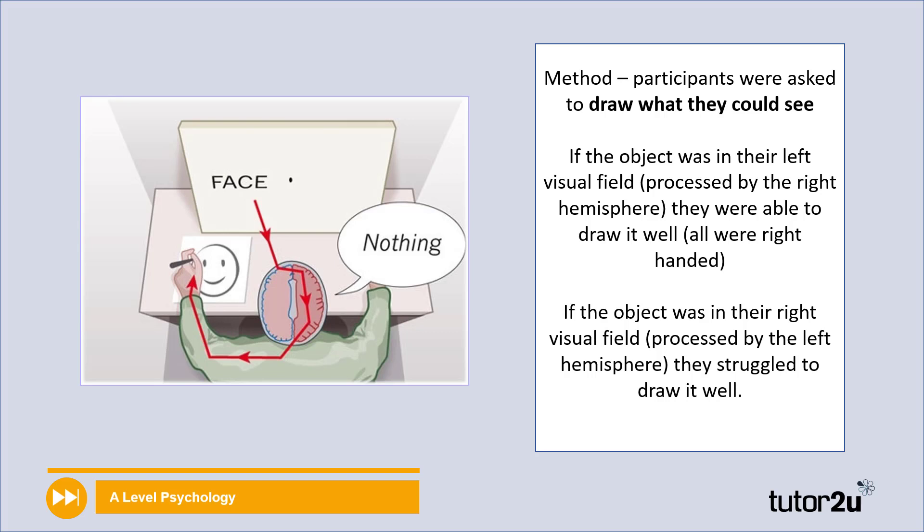If the object was in their right visual field, meaning that it was processed by the left hemisphere, they struggled to draw it well. So to go over that again, if they were asked to draw something that they could see in their left visual field, they did it well. But if they were asked to draw something and presented it in their right visual field, they didn't do too well.